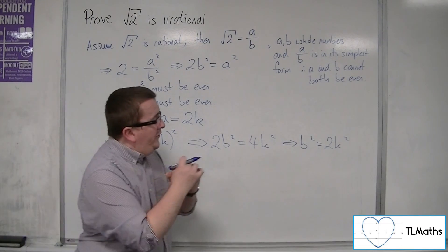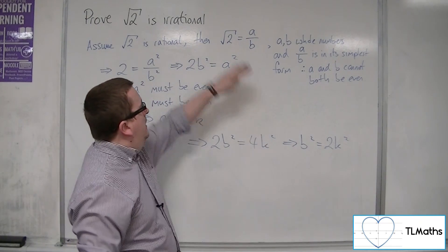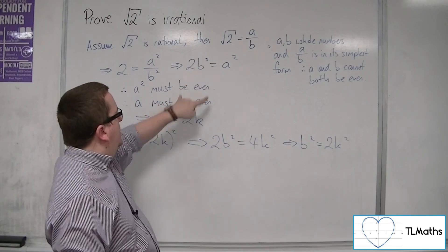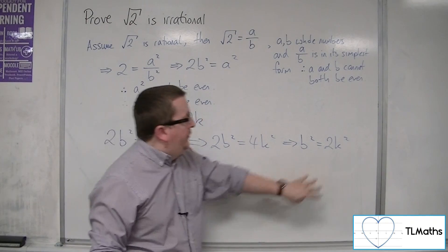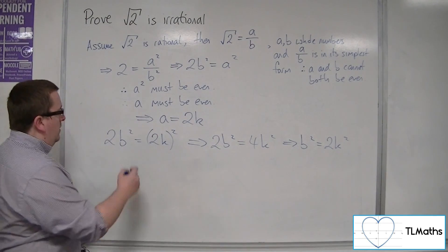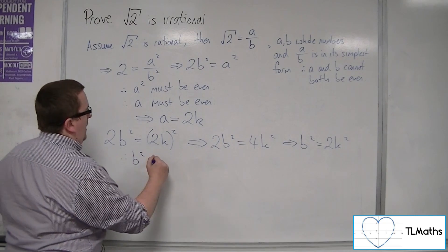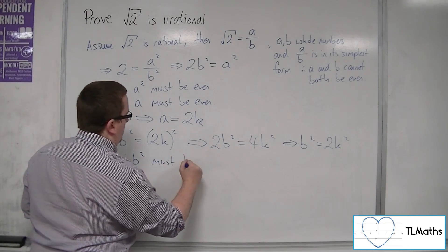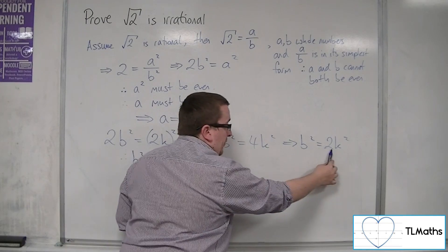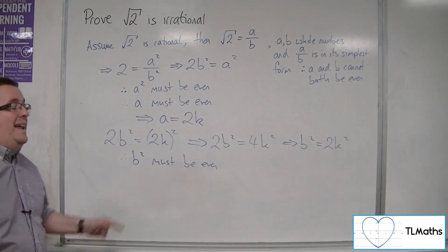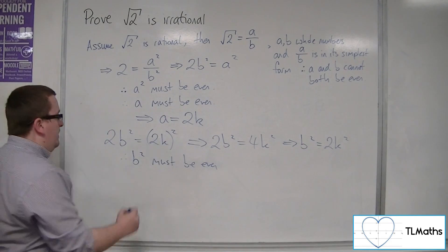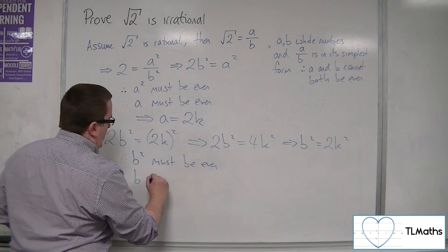Now, for precisely the same reason as this argument, I can now say, well, that means that b squared must be even because it's a multiple of 2. And if b squared is even, then b must be even.